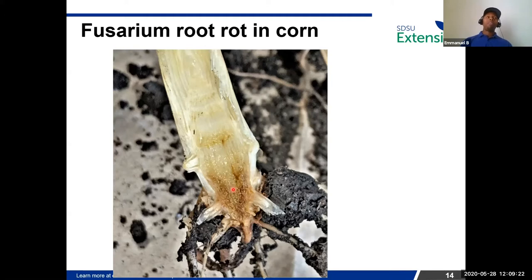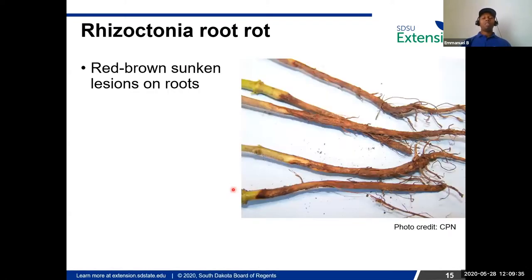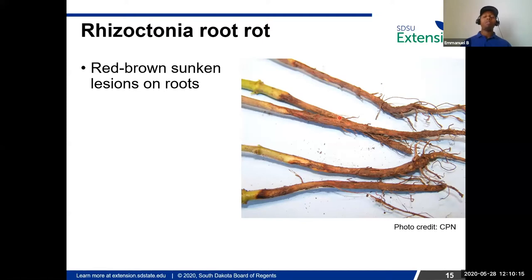Pythium is more of a problem early in the season, and as seedlings grow they become somewhat resistant to it. Rhizoctonia is another rot that can cause damping off — killing seedlings shortly after or even before emergence. A characteristic of Rhizoctonia is a sunken lesion around the stem, typical of Rhizoctonia in soybeans. In small grains, Rhizoctonia patch can occur but is not commonly seen in South Dakota. We see Rhizoctonia root rot more as a problem in soybeans. Look for that sunken lesion around the stems or around the main root as a characteristic of Rhizoctonia root rot.